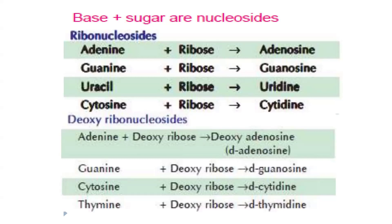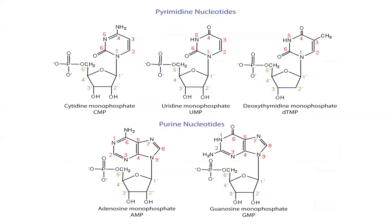For deoxyribonucleosides: adenine + deoxyribose = deoxyadenosine; guanine + deoxyribose = deoxyguanosine; cytosine + deoxyribose = deoxycytidine; thymine + deoxyribose = deoxythymidine. A nucleotide consists of a phosphate group, nitrogenous base, and sugar — giving us, for example, cytidine monophosphate, uridine monophosphate, deoxythymidine monophosphate, adenosine monophosphate, and guanosine monophosphate.